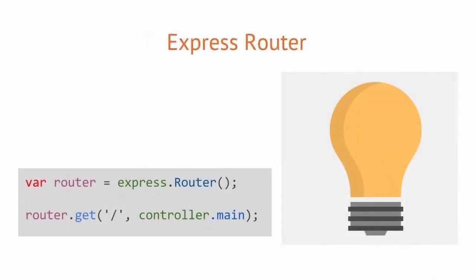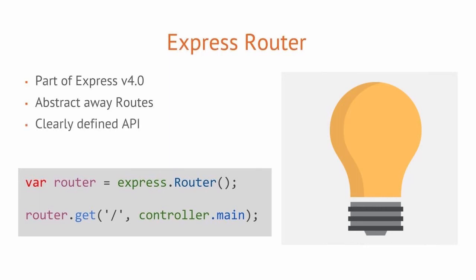Express brought us the router API. By using router, we're able to use the same get, put, post, and delete verbiage while being able to easily abstract away the location of our routes. So instead of defining app.use 100 times in the same app.js file for each route, we can declare it just once and point to the location of our route definition. This allows for clear handling of our API.